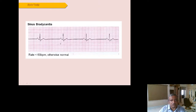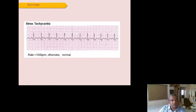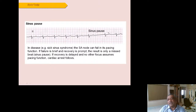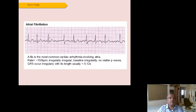Sinus bradycardia shows a rate less than 60 on counting squares. Sinus tachycardia shows a rate of 100 or more. Sinus pause occurs when the PQRST complex appears normally, then suddenly there is no electrical activity for a period before PQRST resumes — the SA node fails to generate an impulse, resulting in no P wave and no QRS. If the pause is too long, the junction or ventricle may take over as an ectopic rhythm.